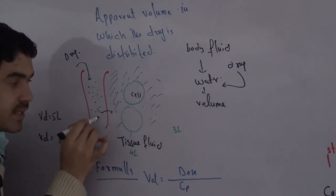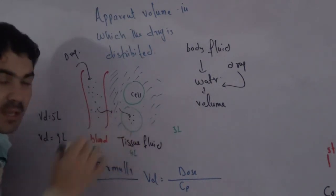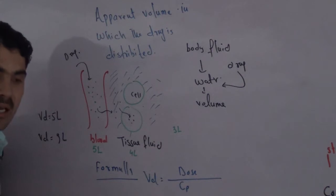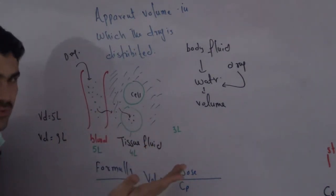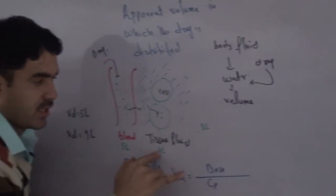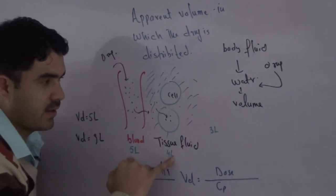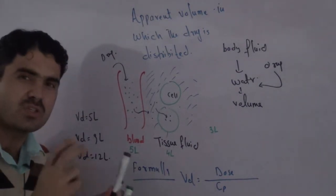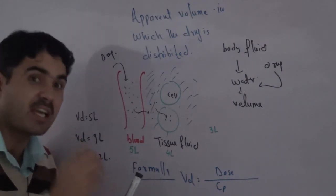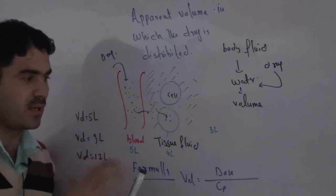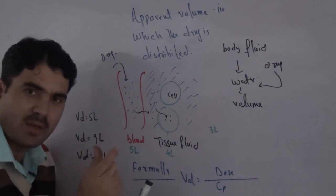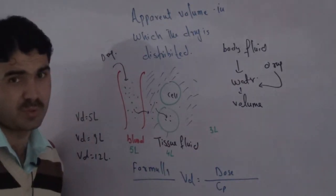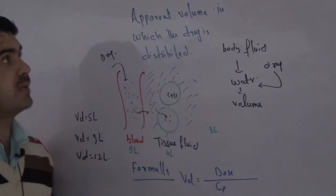If another drug distributes from blood into the tissue fluid and also enters inside the cell — the intracellular water — the volume of distribution increases further. With 5 liters of blood, 4 liters of tissue fluid, and 3 liters of intracellular water: 5 + 4 + 3 = 12 liters. So the volume of distribution is 12 liters. This idea has been taken from Lippincott's — a drug distributed only in blood has less VoD, distributed in tissue fluid has more, and if it also enters the cell it has the highest volume of distribution.